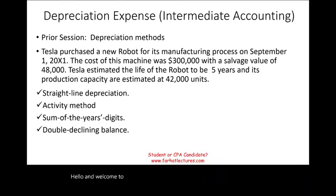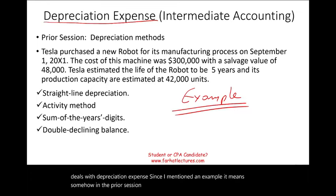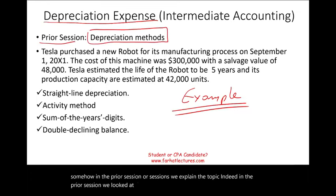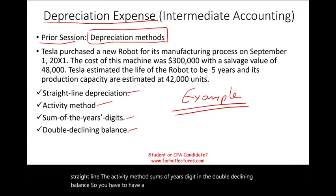Welcome to this session in which we look at an example that deals with depreciation expense. Since I mentioned an example, it means in the prior session we explained the topic. In the prior session, we looked at the different depreciation methods, which are the straight line, the activity method, sums of years digit, and the double declining balance. You have to have a good understanding of these methods before you work this example.